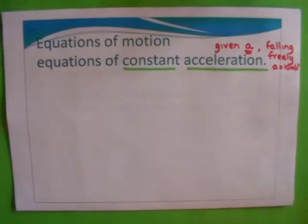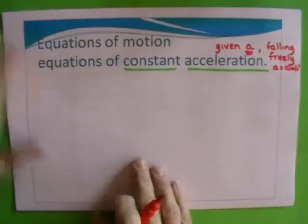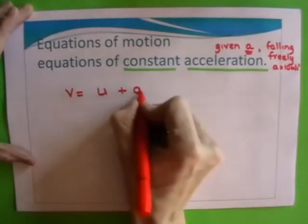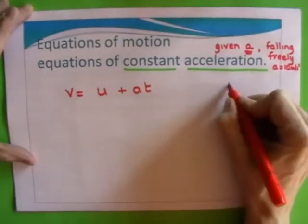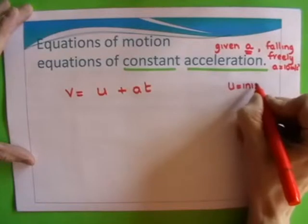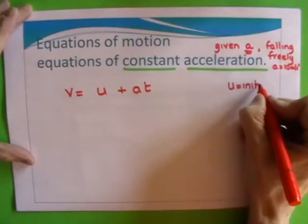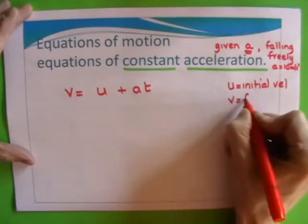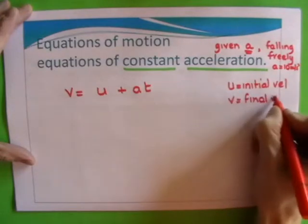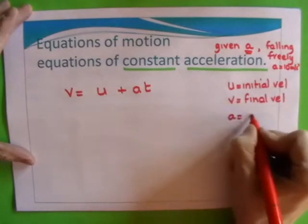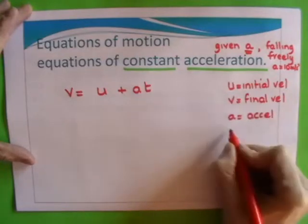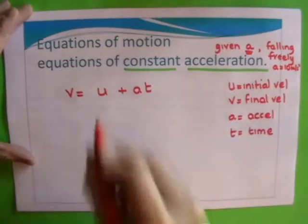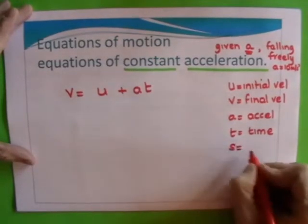So the first one, v is equal to u plus at, and we'll just write what everything means. U is initial velocity, v is final velocity, a is acceleration, and t is time.